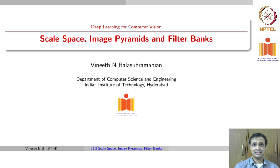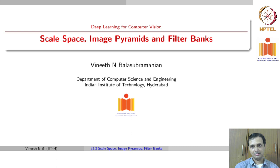Moving on from the last lecture, we will get into scale space, image pyramids and filter banks in this one. If you recall, one of the limitations of the Harris corner detector that we stated last time was that it is not scale invariant.